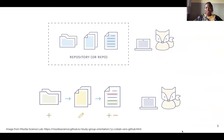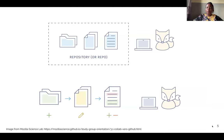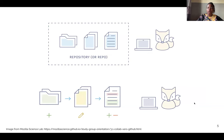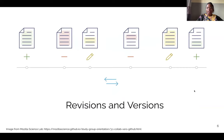Here we see a picture of a fox with a repository — which we'll soon define — but for now, a repository is a folder, also called a repo. This fox has made changes: additions, edits, highlights, and subtractions. There has to be a way of tracking everything that happens to our files. Every time you make a change it's called a revision, and every time you make a revision you get a new version. Store those terms — I might be asking you in a few minutes.